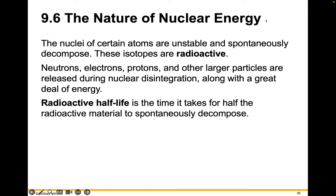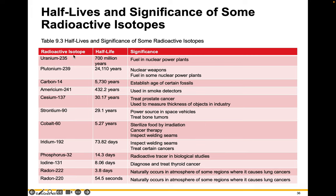The nuclei of certain atoms are unstable and spontaneously decompose, and these isotopes are radioactive. Neutrons, electrons, protons, and other larger particles are released during nuclear disintegration, along with a great deal of energy. A radioactive half-life is the time it takes for half the radioactive material to spontaneously decompose. For example, the uranium-235 used in nuclear power plants takes 700 million years for half of it to decompose into a different isotope.